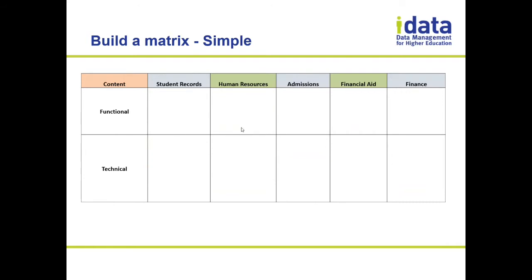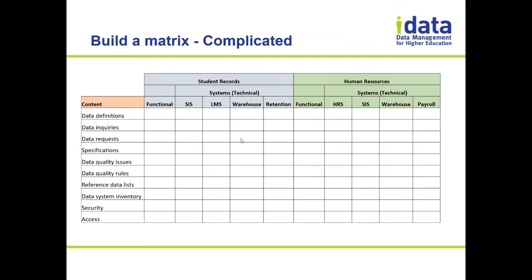You can create a simple matrix for your governance around the business areas and functional and technical resources. The same person can appear in multiple buckets, and that's fine, or you can have a fairly complicated one.